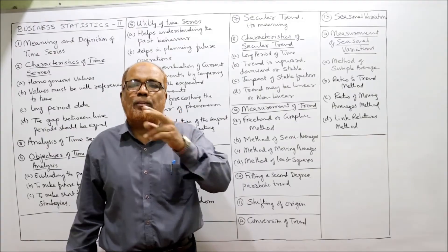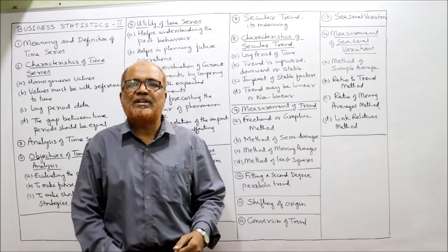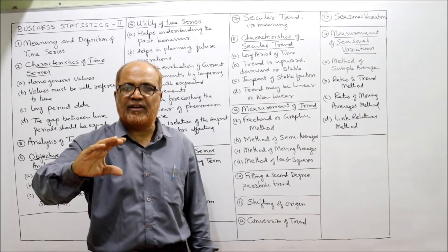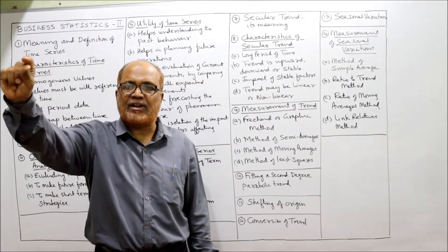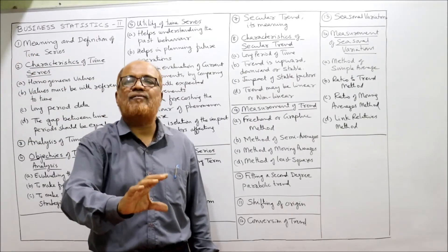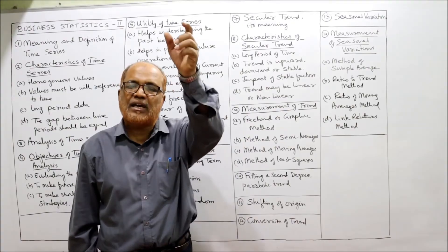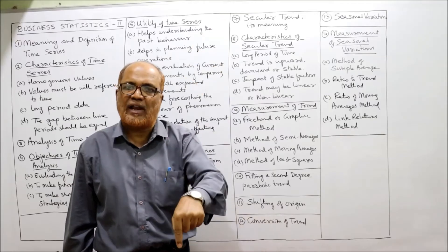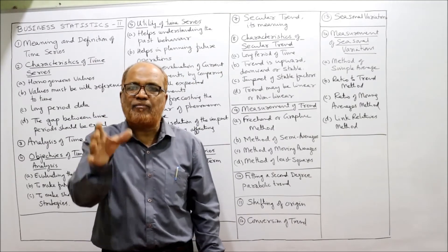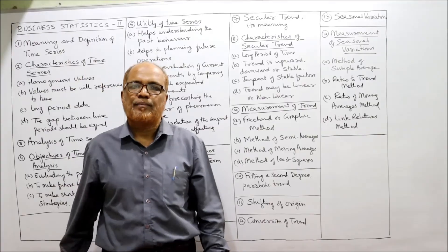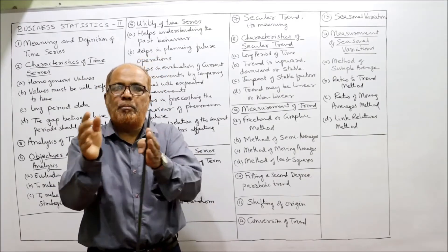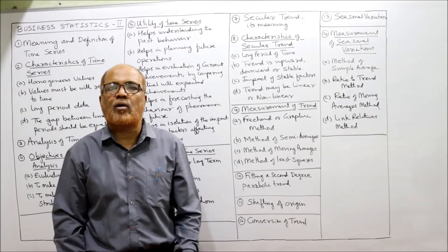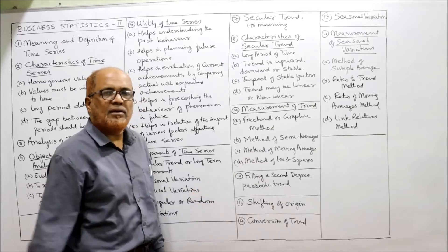The second method is semi-average. We divide the complete data into two halves. For example, with 10 years of data, the first five years form one group and the next five years form another. We calculate the average for each group. On a graph, we plot the midpoint of each five-year period and join the two points to get the trend line according to the semi-average method.